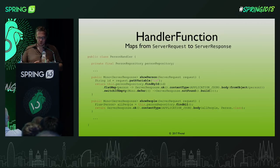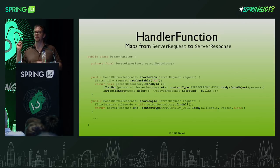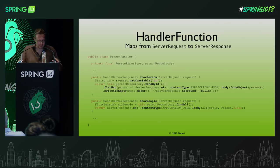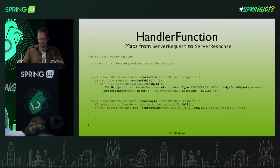A person handler, which takes the role of a controller, has a repository. We have two handler functions: one is called show person, and the other called show people. You can see that it maps from a server request to a Mono of a server response — a delayed, future response. This framework is completely asynchronous. It builds on top of Reactor and works as any WebFlux application does.